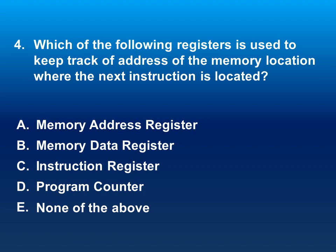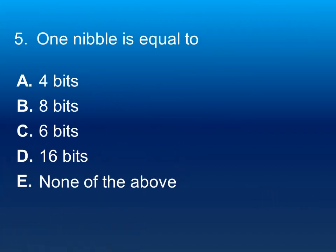The fourth question: which of the following registers is used to keep track of the address of the memory location where the next instruction is located? The correct answer is program counter. Next question: one nibble is equal to how many bits? The correct answer is four bits.